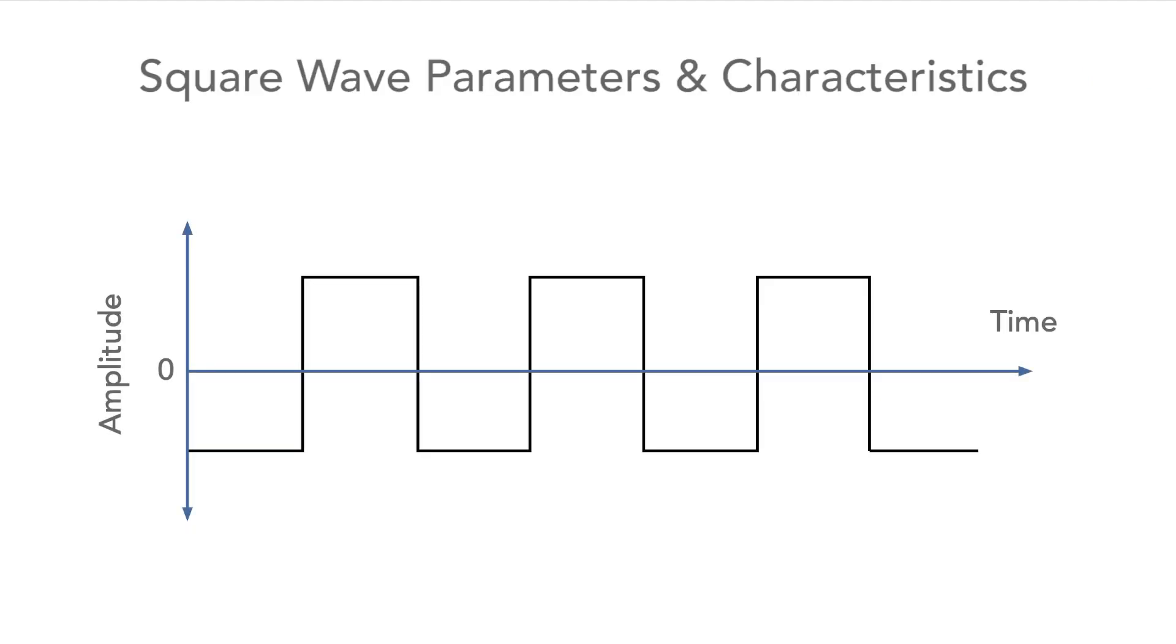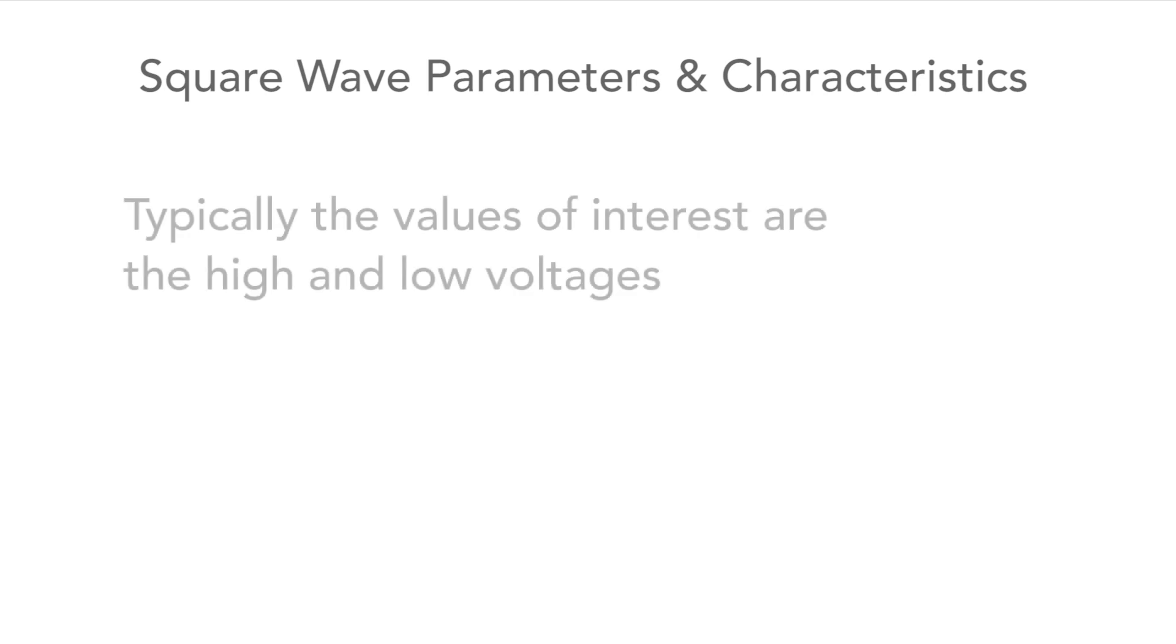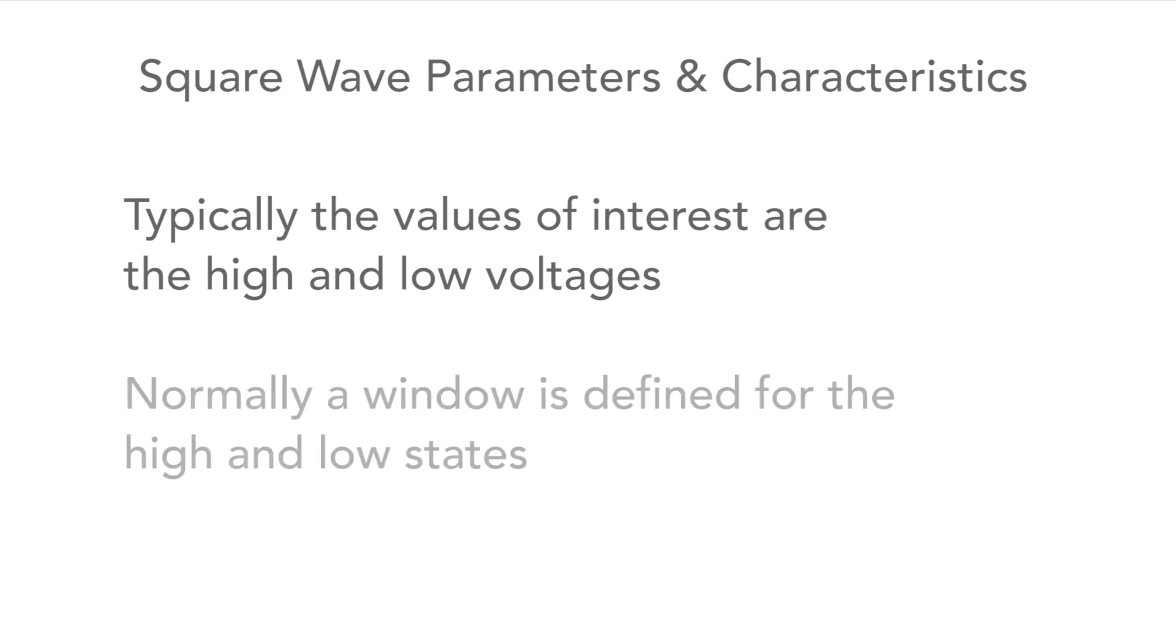The first aspect of a square wave is its amplitude. It's possible to measure the peak or peak to peak values of the waveform, but more usually the voltages of interest are the high and low values. Typically for logic or digital circuitry a window is given for these.